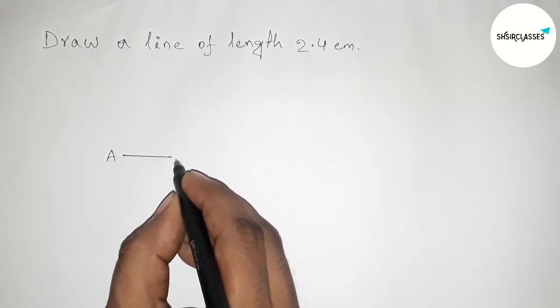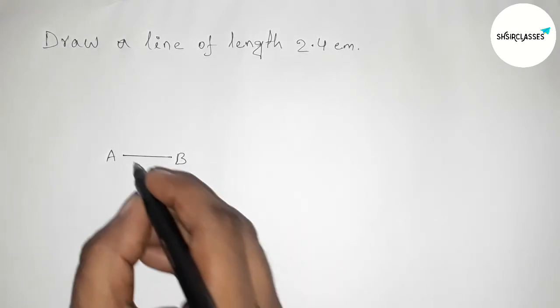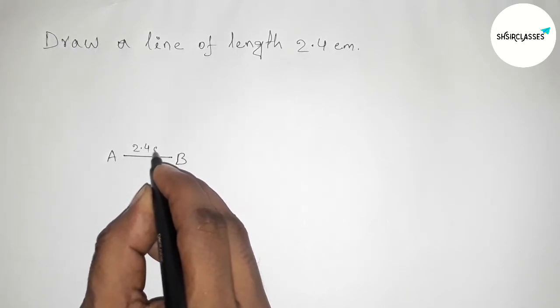Next, taking here point A and here B. So AB equals to 2.4 centimeter line.